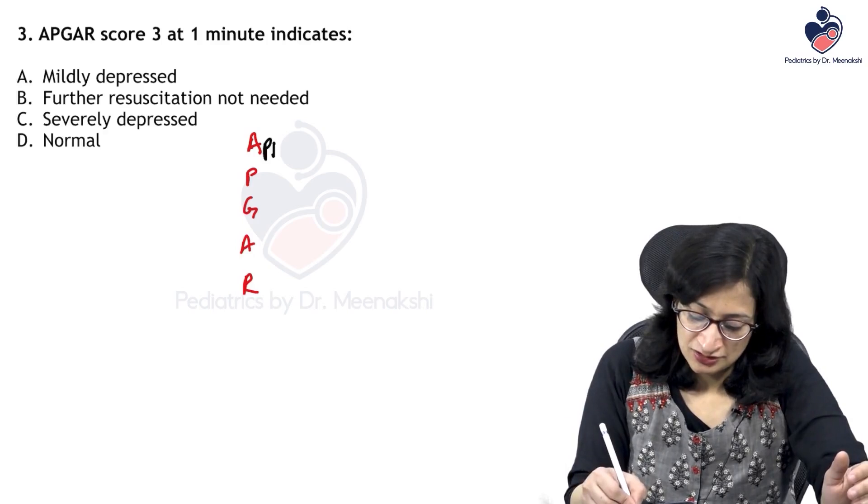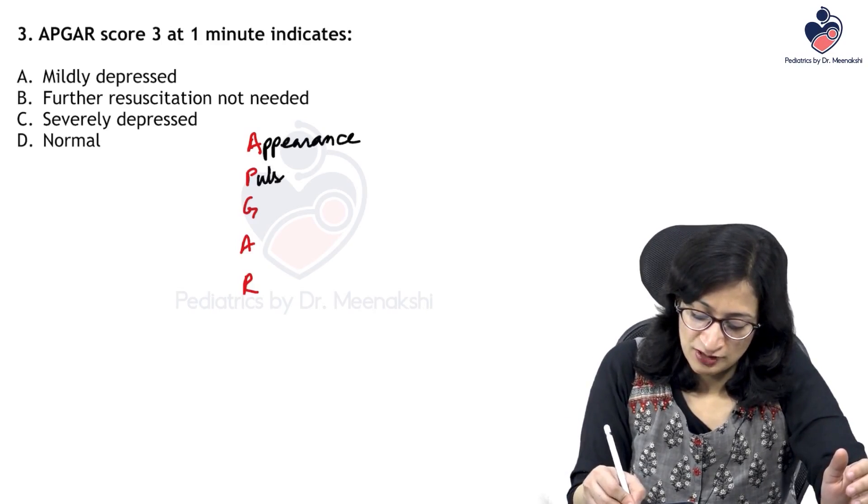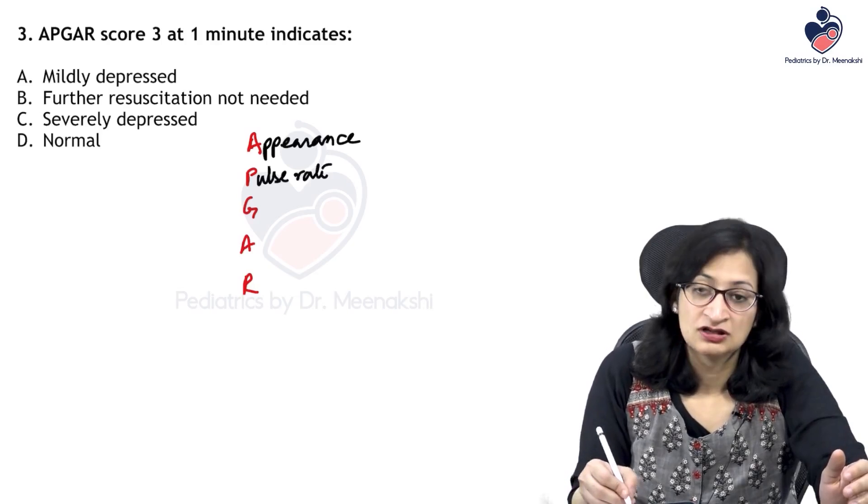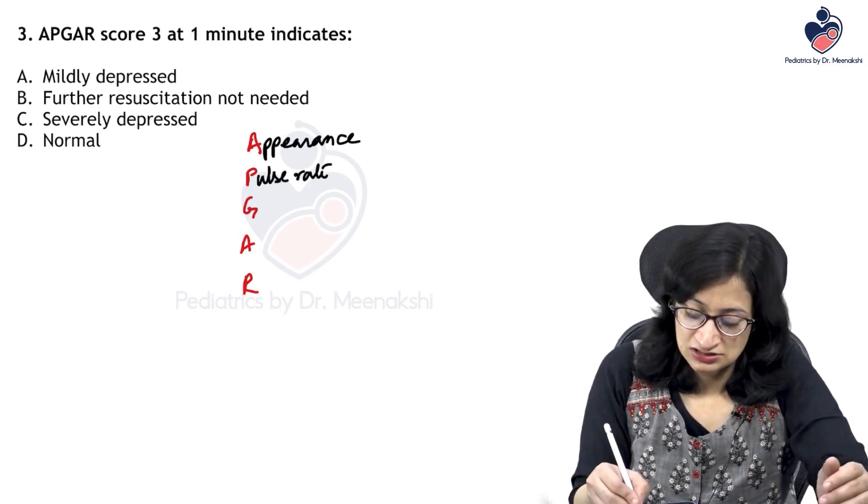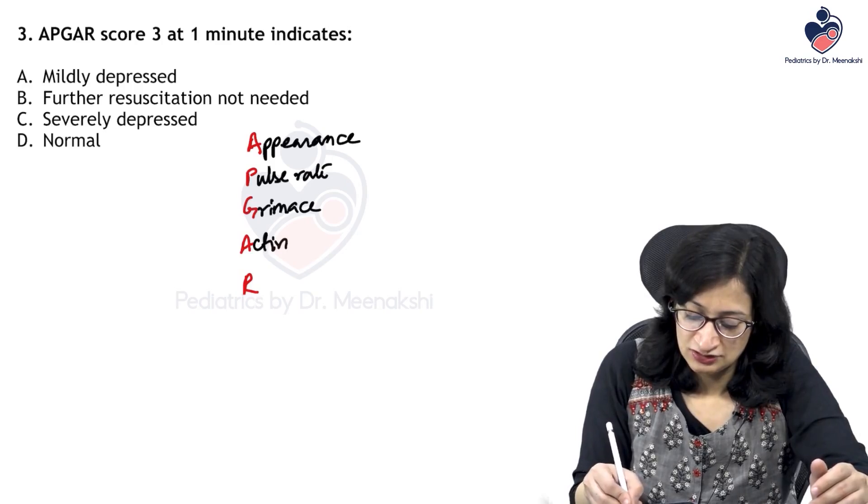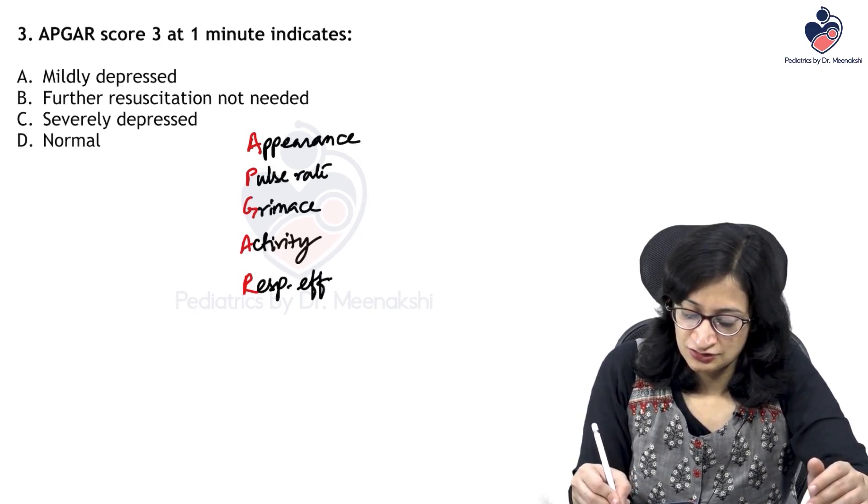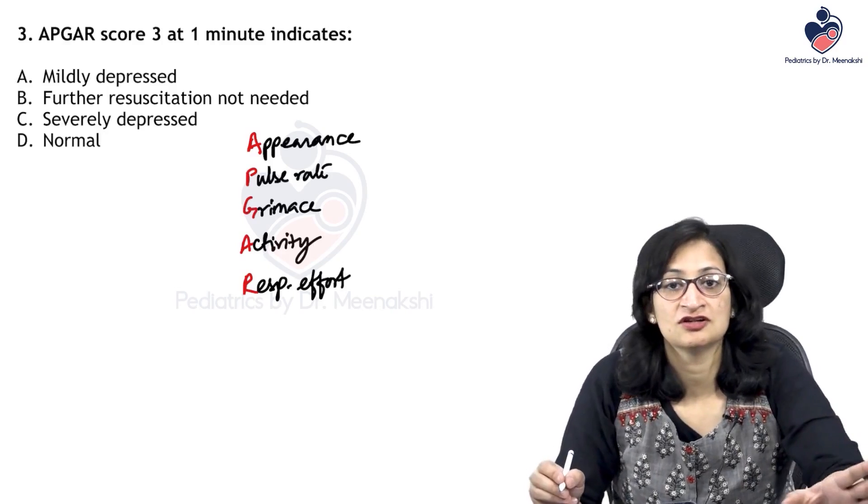A is for appearance, P is for pulse rate, G is for grimace, another A is for activity, and R is for respiratory effort and not respiratory rate.